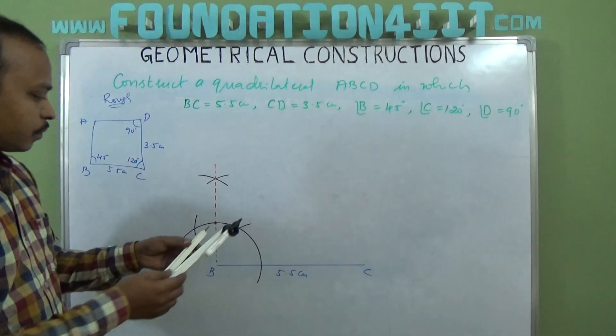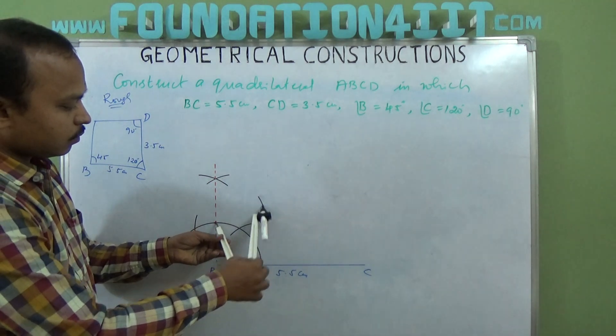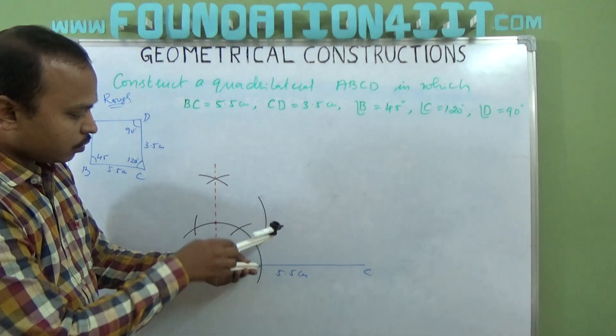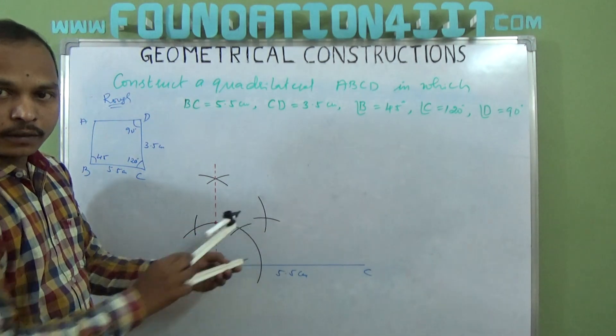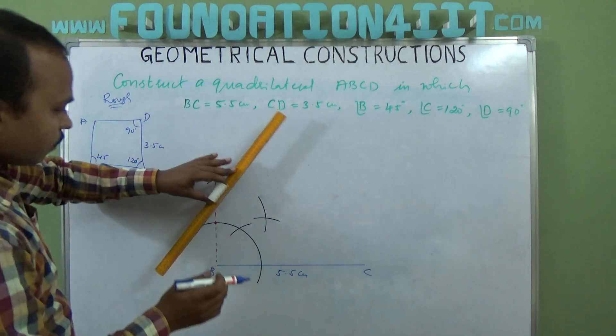So this from the 90 degree, draw an arc. From zero also draw an arc. Now extend this. That is 45 degrees.